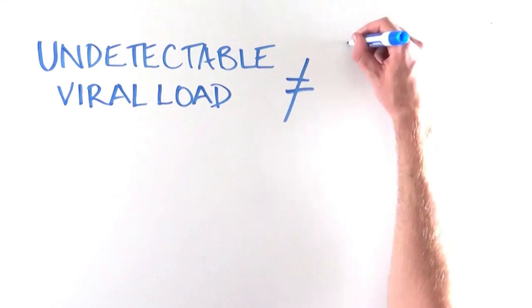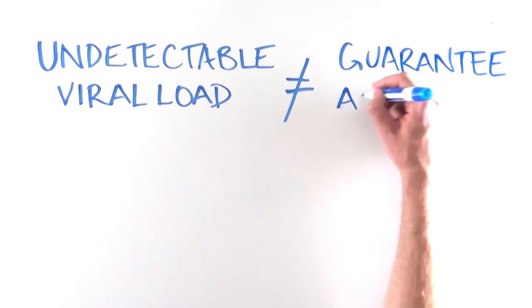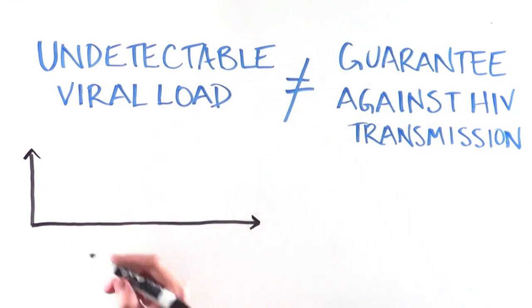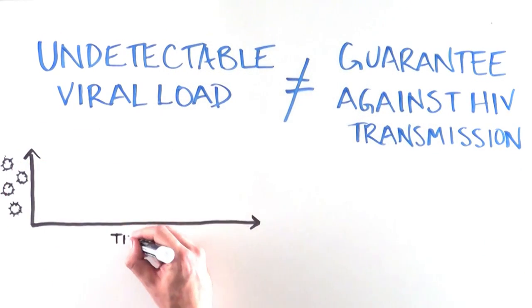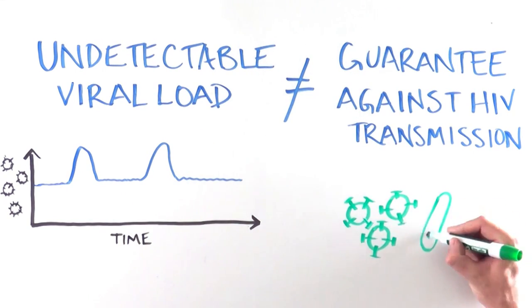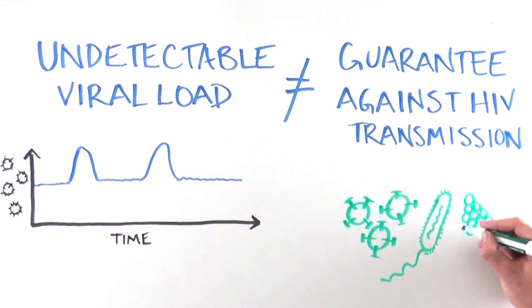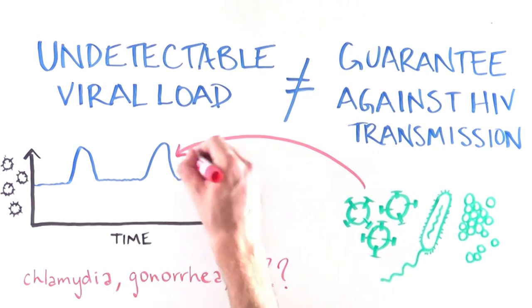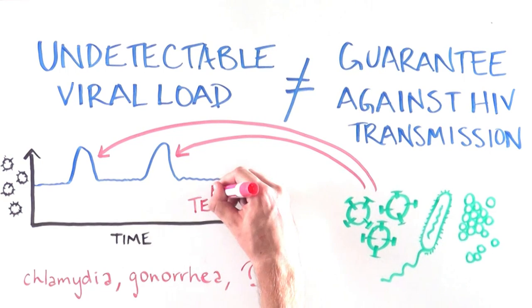However, undetectable viral load is not an absolute guarantee against HIV transmission. In fact, the amount of HIV virus present in the body can fluctuate over time if someone has a secondary infection, such as gonorrhea or chlamydia, or even without any known cause. These fluctuations could go undetected in between medical checkups.